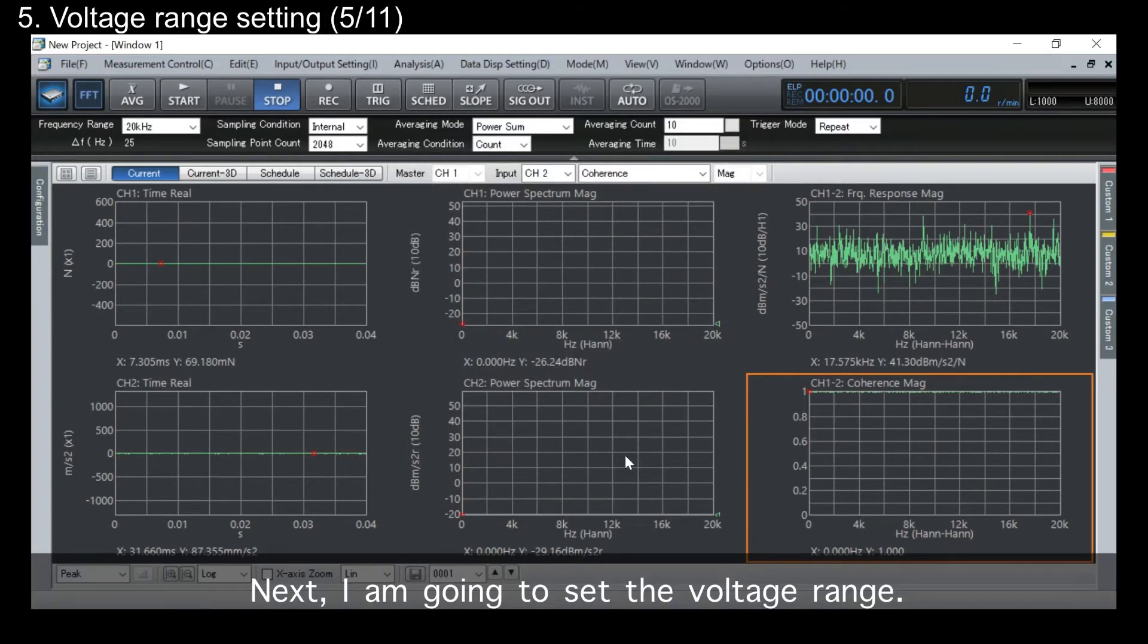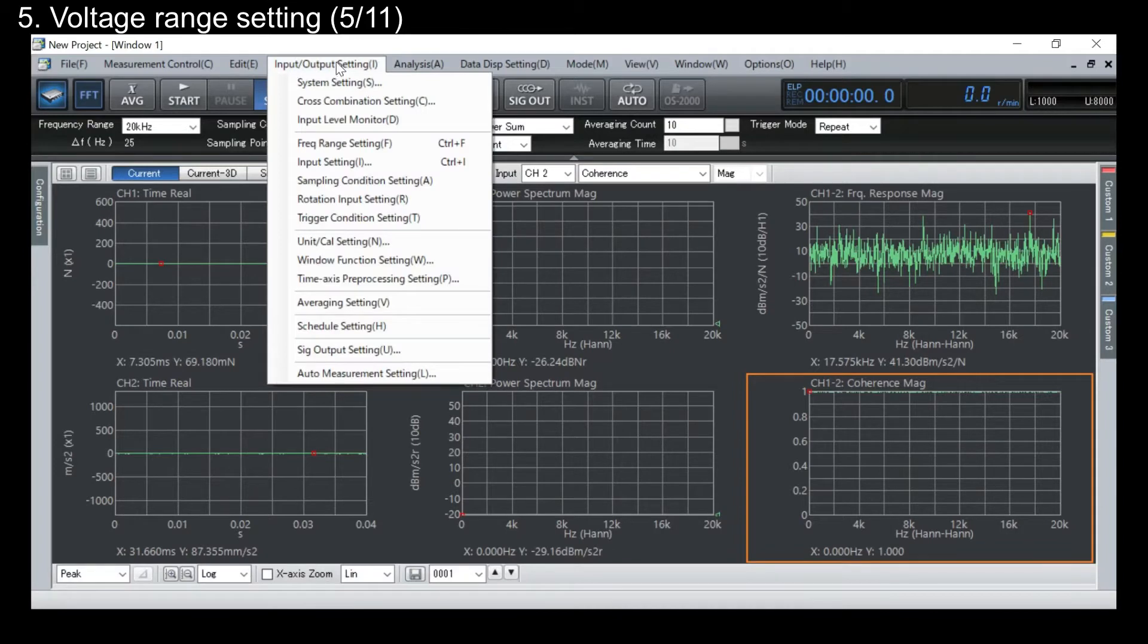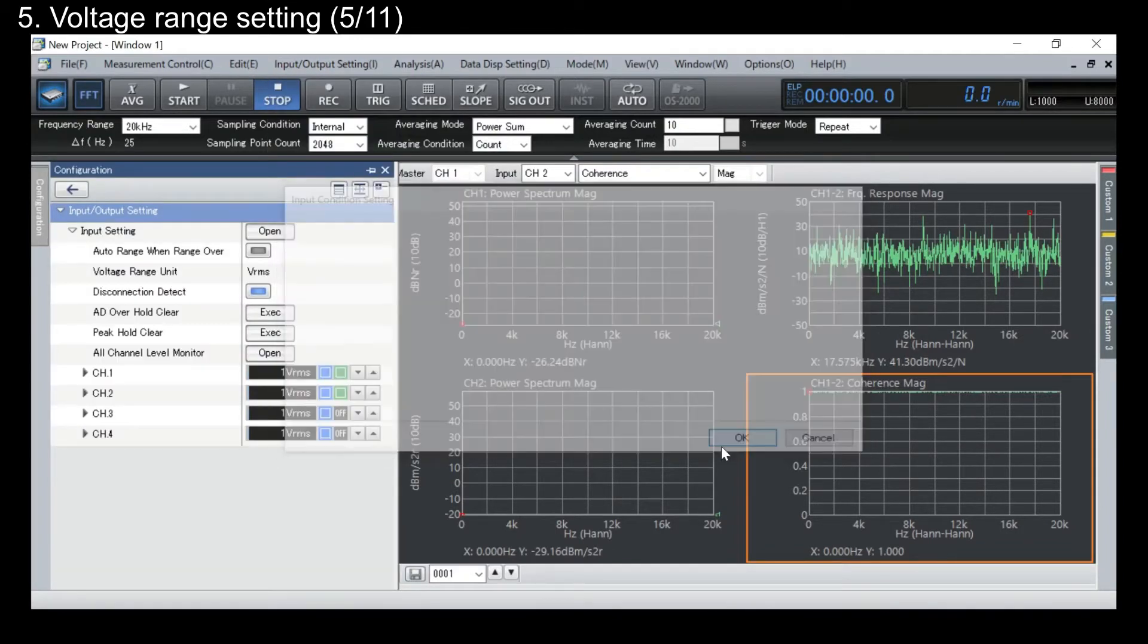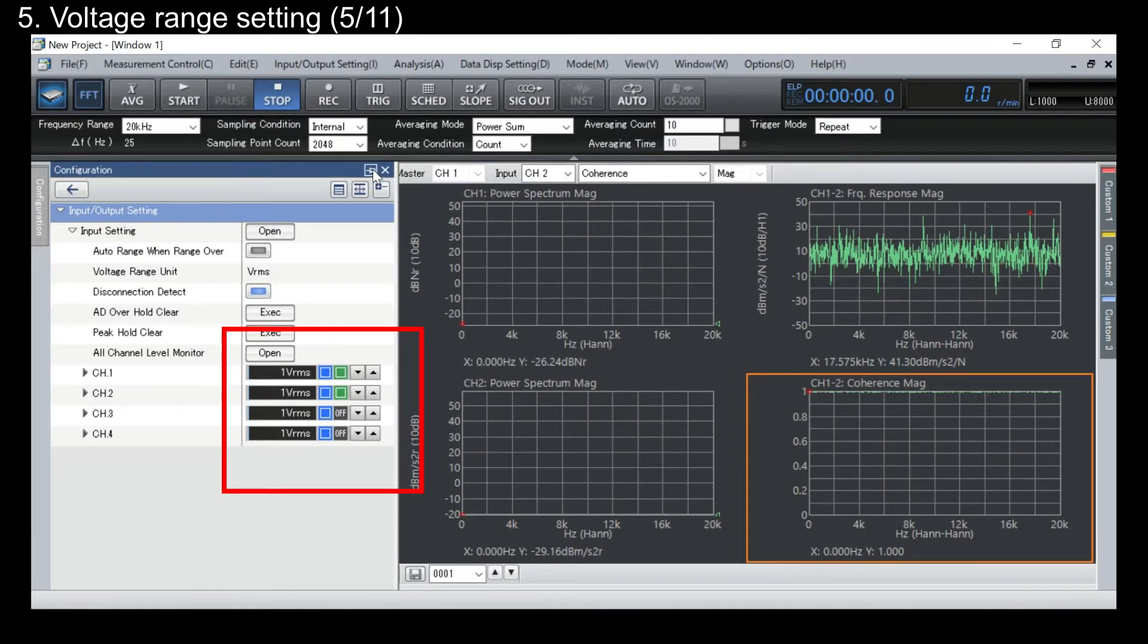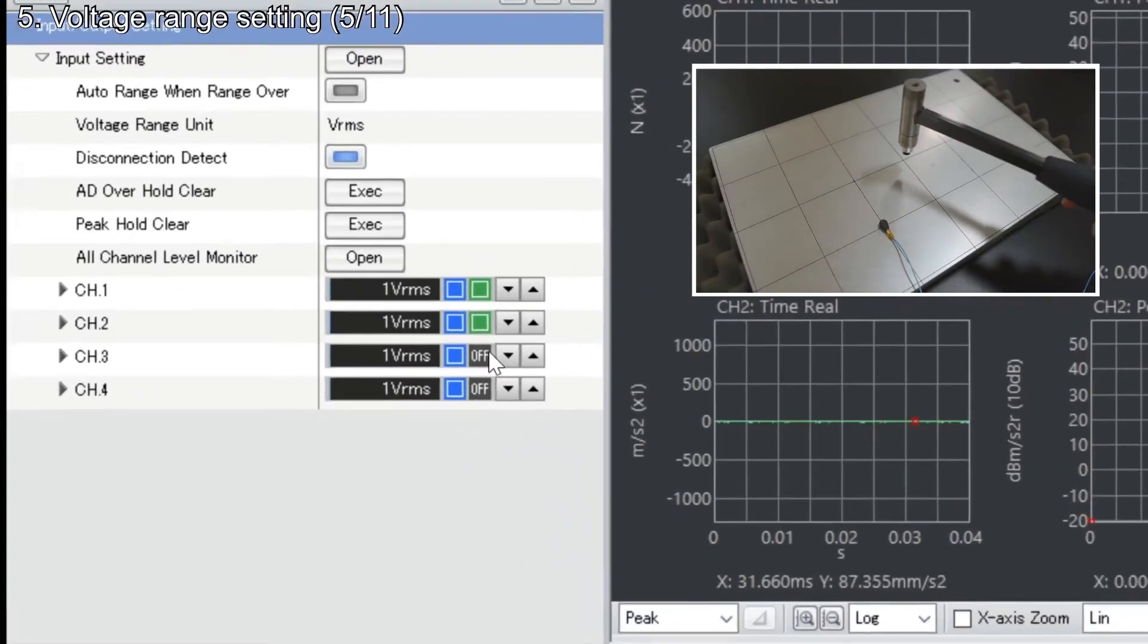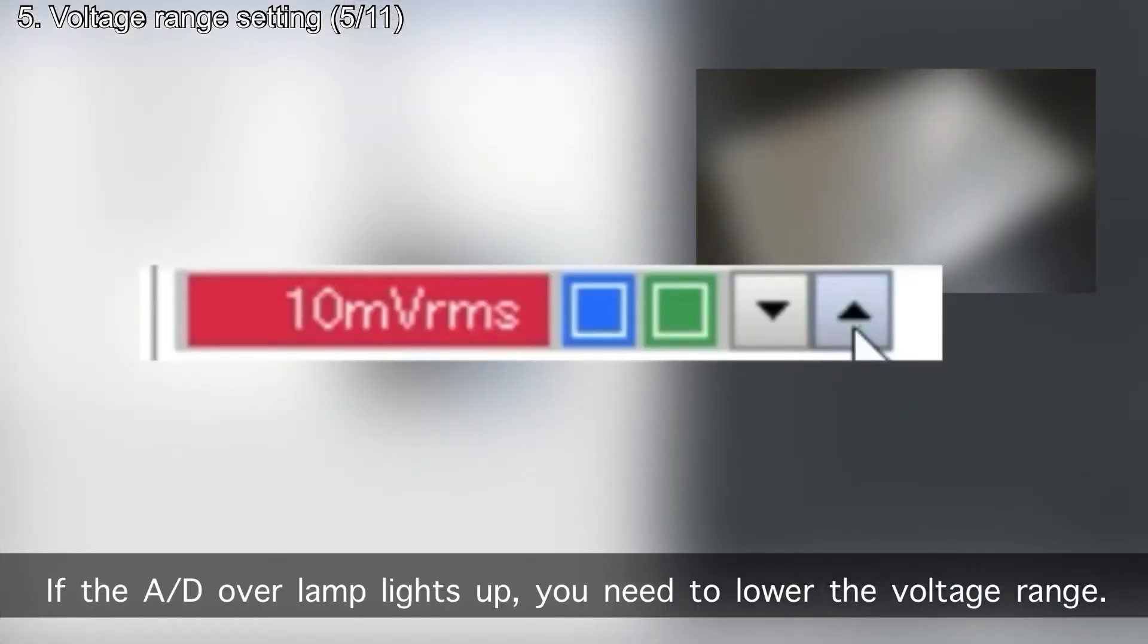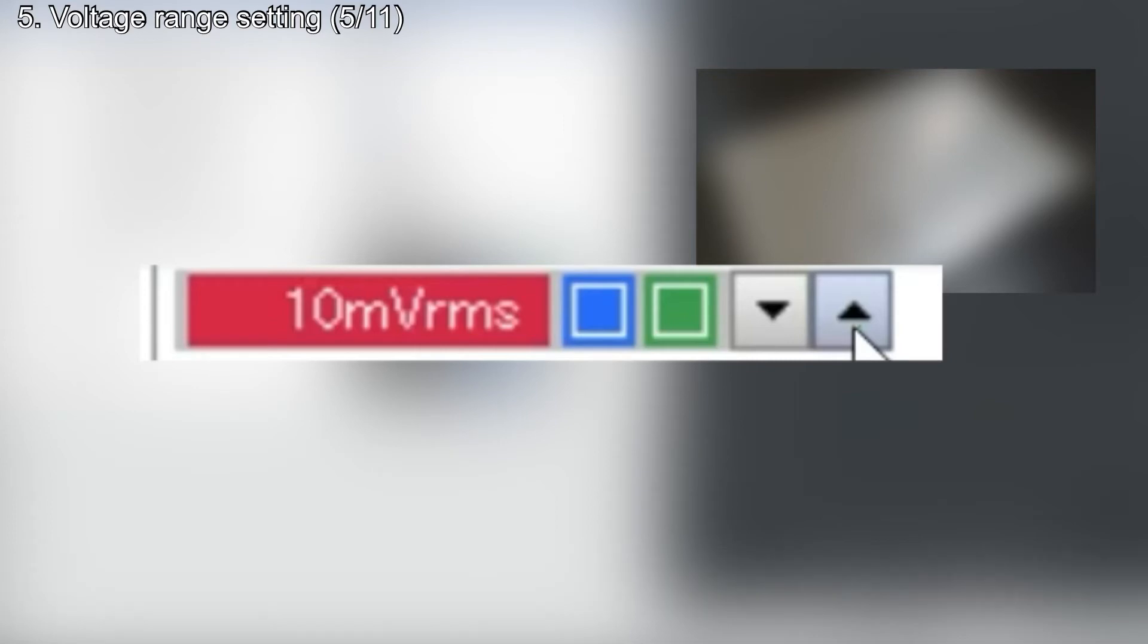Next I'm gonna set the voltage range. What we're gonna do first is display the voltage range indicator. Next, adjust the voltage range by doing some test hits. If the A-D over lamp lights up, you need to lower the voltage range.